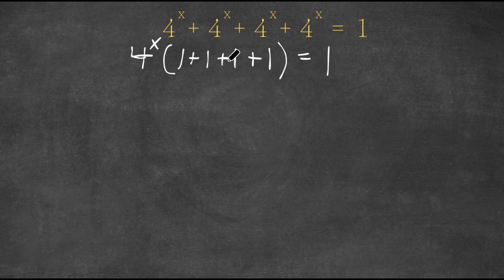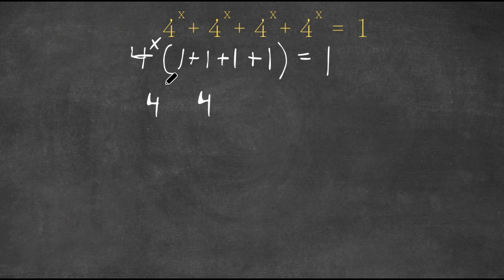Simplifying what's in the parenthesis: 1 + 1 + 1 + 1 is simply 4. So now I have 4^x × 4 = 1.